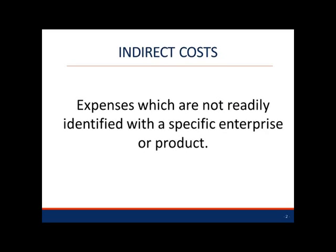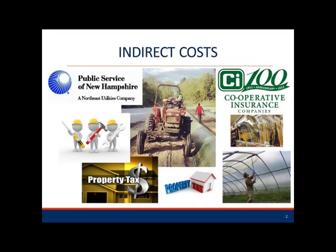Indirect costs are those expenses which are not readily identified with a specific enterprise or product. These include costs that are incurred irrespective of production levels. Examples would be machinery and building depreciation, interest on capital, essential repairs and maintenance, property taxes, and business insurance. Indirect costs also include other shared expenses not clearly identified with a specific crop, such as utilities, general farm supplies, and advertising and promotion.